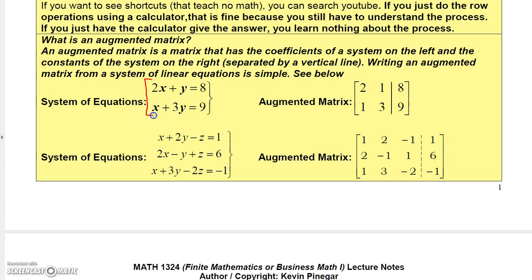Here I have two equations: 2x plus y equals 8, and the second equation x plus 3y equals 9. For the augmented matrix, you put the coefficients in — 2 for 2x, 1 for 1y, and then the constant 8. For the second row, you put 1 for 1x, 3 for 3y, and 9 for the constant. You can separate your constants from your coefficients with a vertical line. Some texts use a dotted line, but a vertical line is quicker.